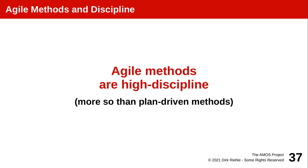Sometimes people don't quite believe it, but continuously delivering software in increments makes agile software development much more high-discipline than plan-driven development. People used to say that because agile doesn't plan as much it isn't disciplined — quite the opposite. Agile methods put people into a strictly defined work rhythm, which is much more high-discipline than plan-driven software development.